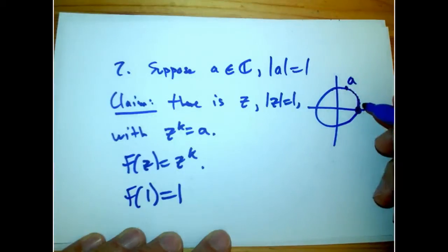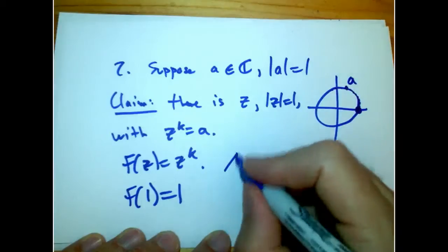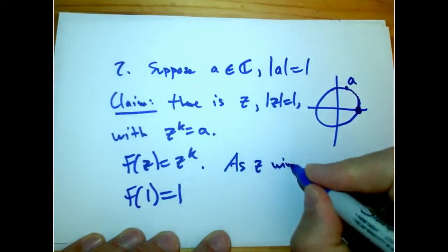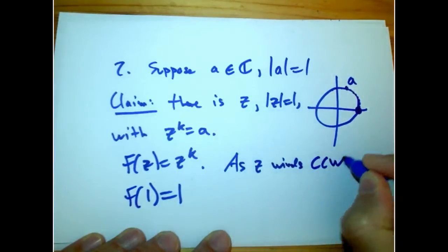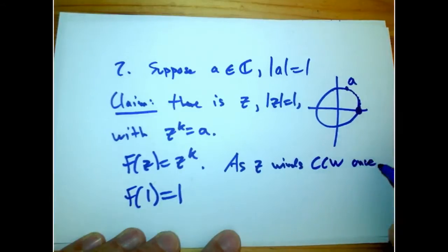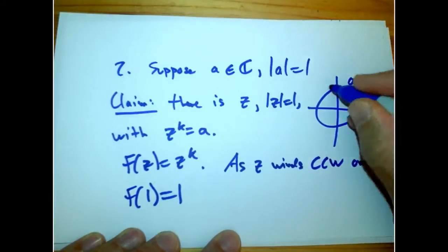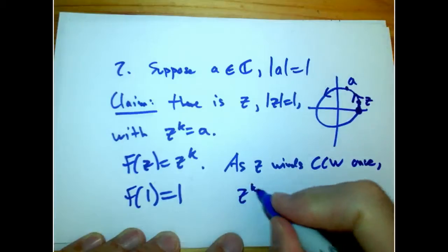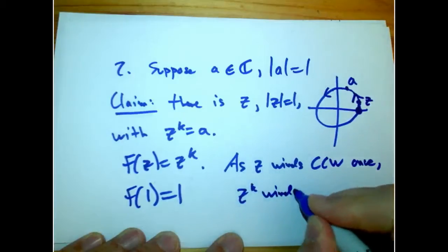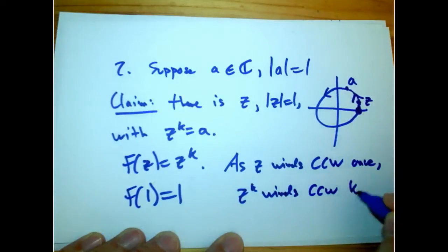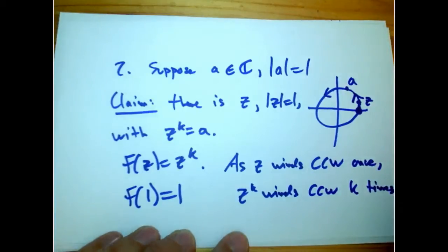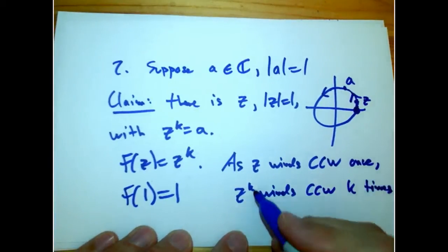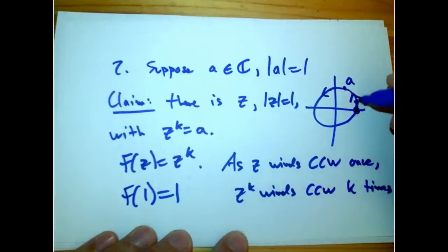And then, what happens as I increase z, as I walk z around the unit circle, what happens is that z^k, as z winds counterclockwise once around the unit circle, z^k also winds counterclockwise. And it happens to go k times, but all we need to know is that it goes at least once around the circle.